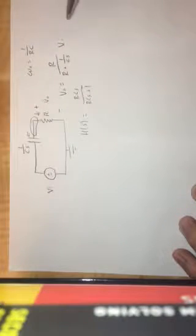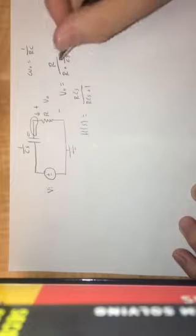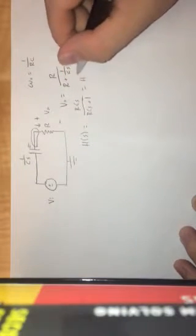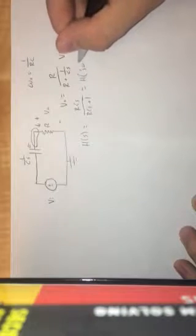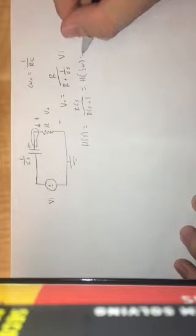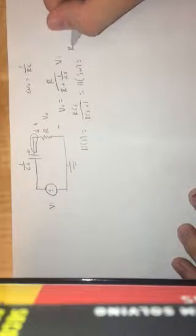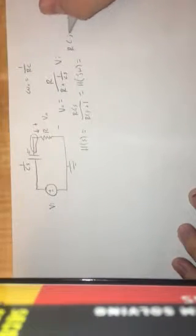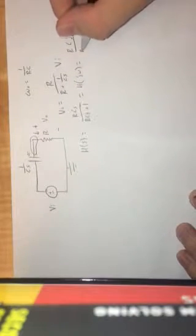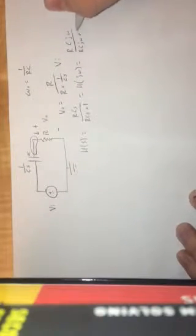And so the next step would be to get the Fourier transform of it. It's pretty simple. Just substitute J omega in for everywhere you see an S. So H of J omega is equal to RC J omega divided by RC J omega plus 1.